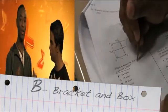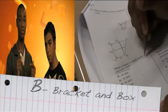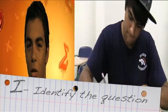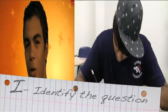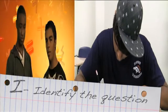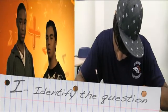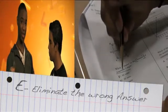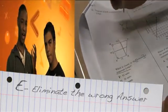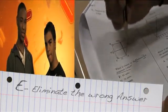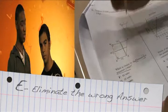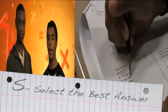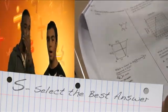B is bracket — draw brackets around separate ideas so you can focus on one thing at a time. I is identify the question. Now that you've read, reread, underlined, and bracketed and boxed, you can now identify what the question is really asking you. Which takes us to E — eliminate wrong answers. First, find the obvious wrong answers and eliminate them. That increases the chances that you'll get the right answer. And to wrap it up with S — select the best answer. By now, you're on your way to exemplary.